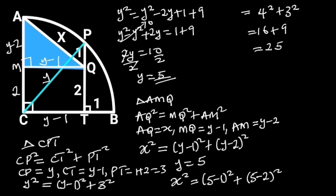So X squared is equal to 25. Taking the square root of both sides will give us X is equal to 5 units. Thanks for watching.